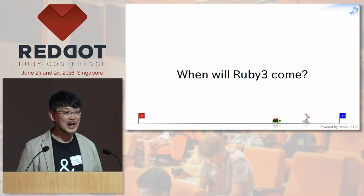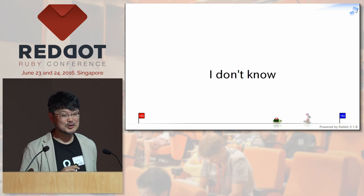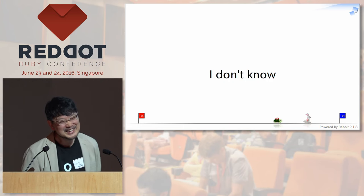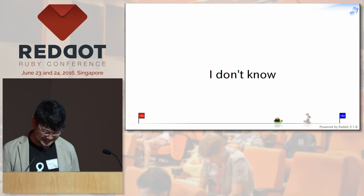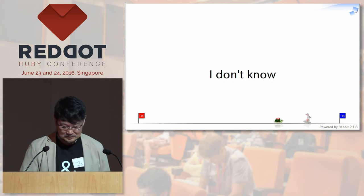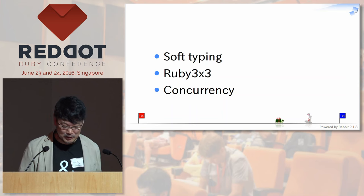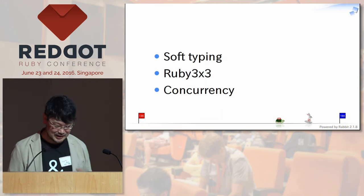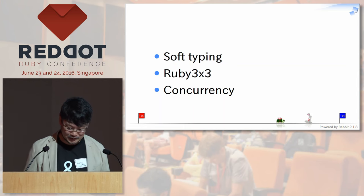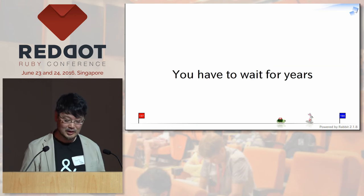You may ask: when will Ruby 3 come? Actually, I don't know — I'm sorry. My hope is we will see Ruby 3 in this decade, before the Olympics in Tokyo. We will try making Ruby 3 with soft typing, 3 times faster compared to the current version, and some kind of real concurrency in the language. We have a lot of things to do and we need more resources. You will have to wait years — I'm sorry. But we wish for your input and contribution to keep moving forward. We have to keep moving forward, to make you happy, and we will improve the situation by working together as a community.